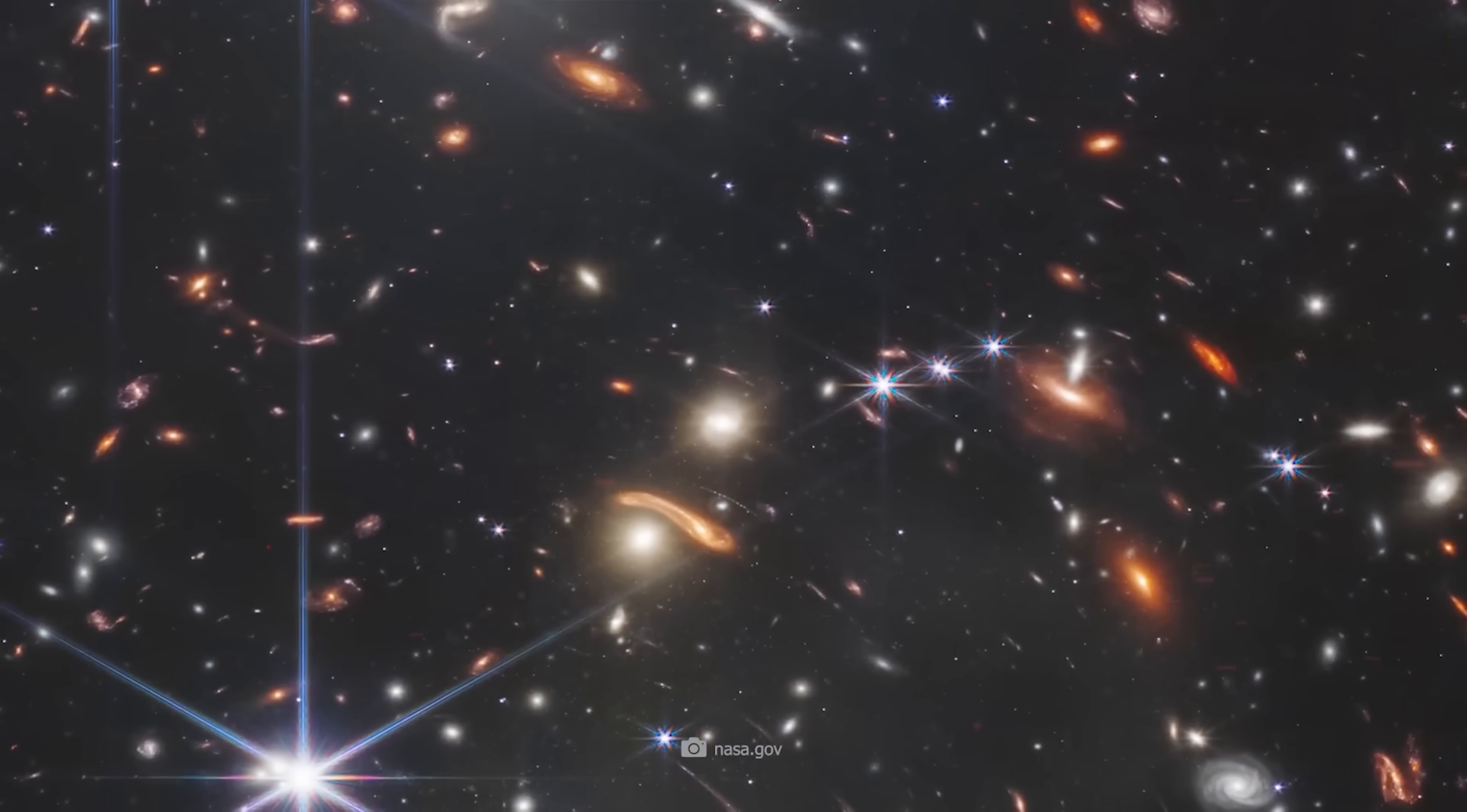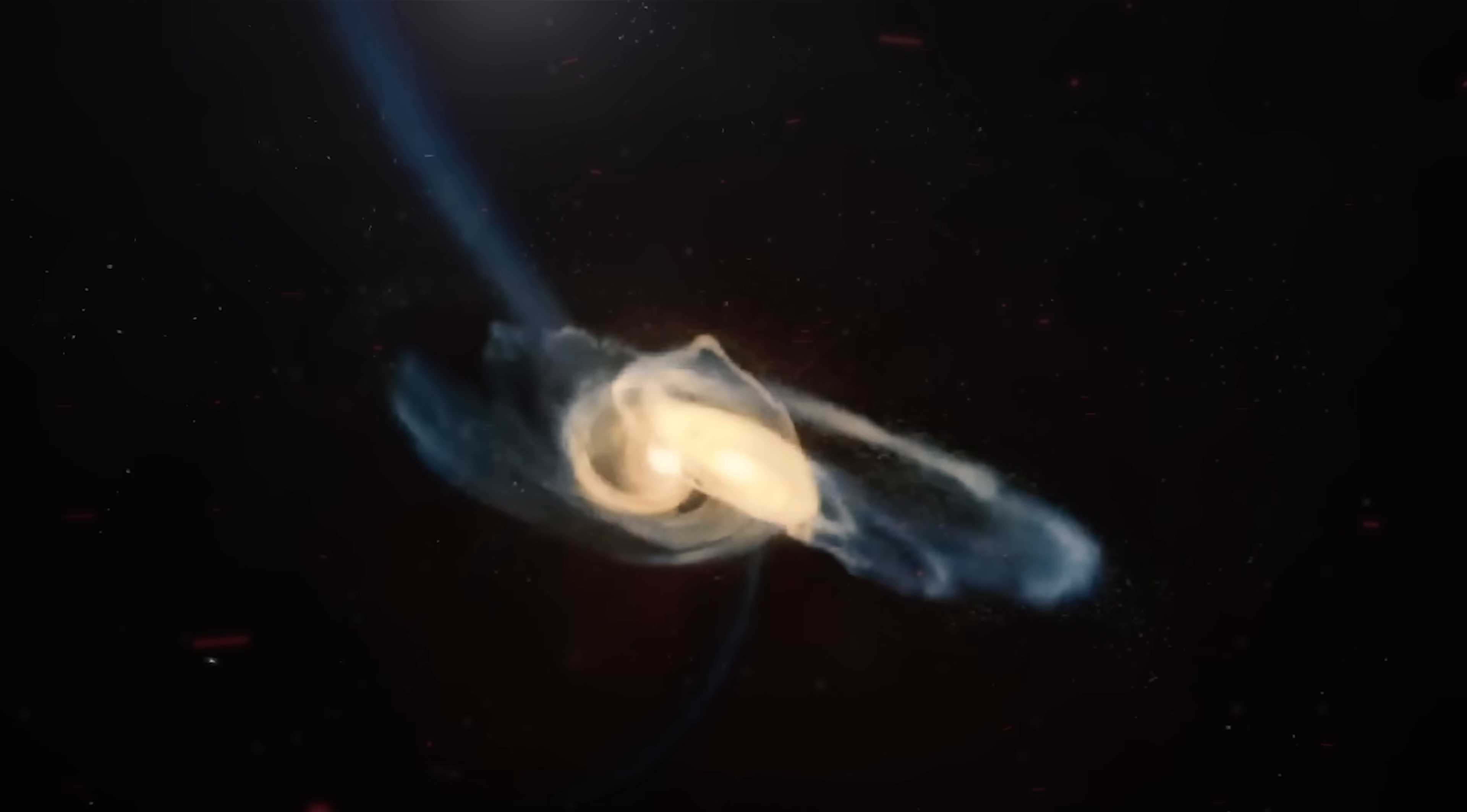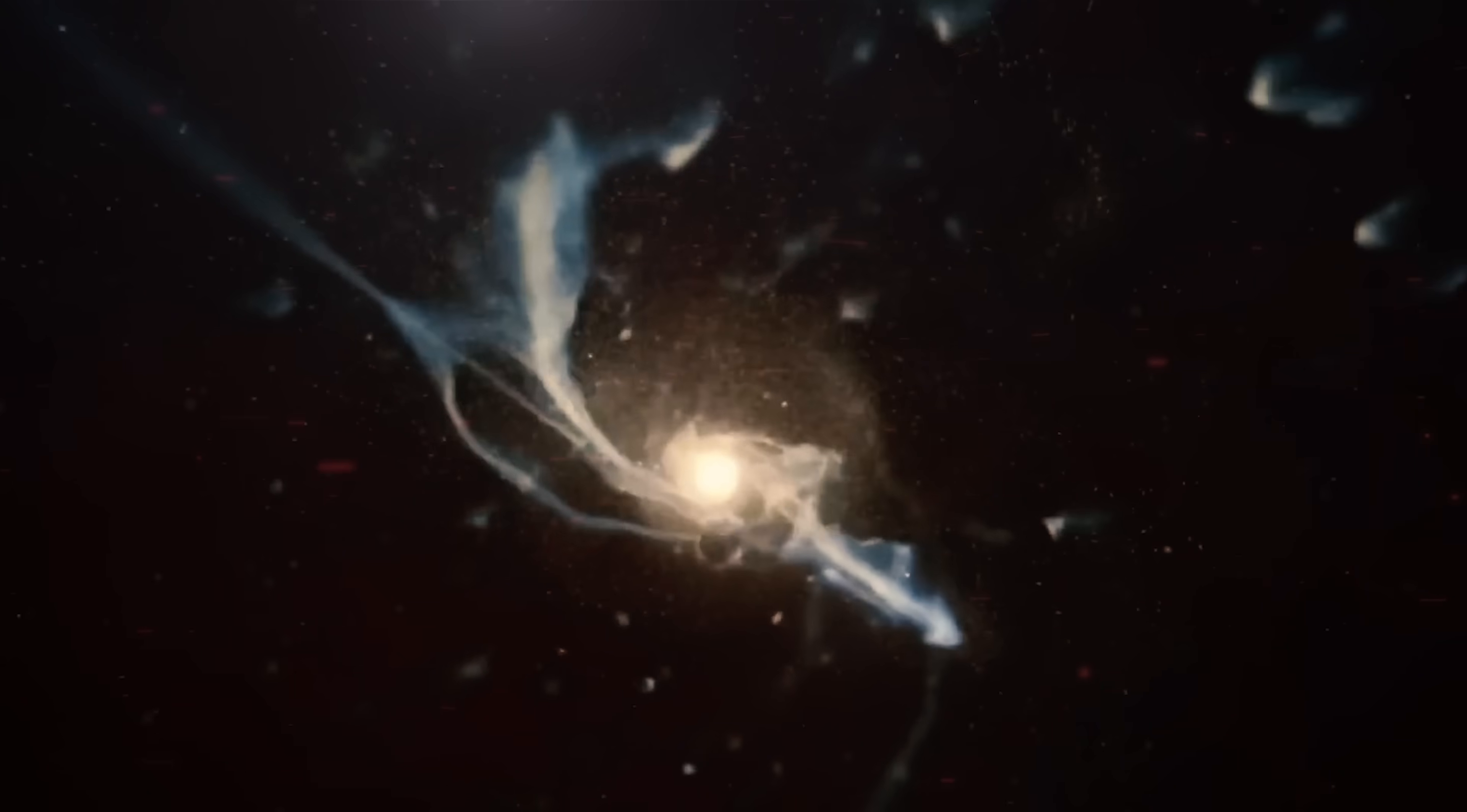Currently accepted theories suggest that these early proto-galaxies reached adolescence 1 to 2 billion years into the universe's life, forming into dwarf galaxies that began devouring each other to grow into ones like our own, the Milky Way.